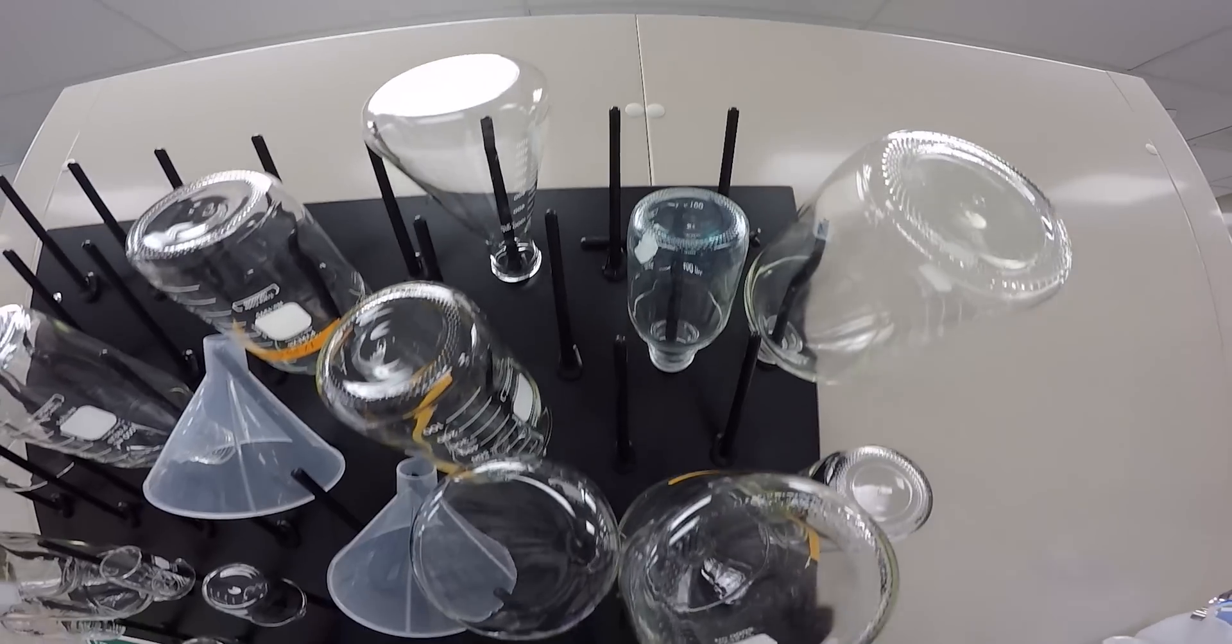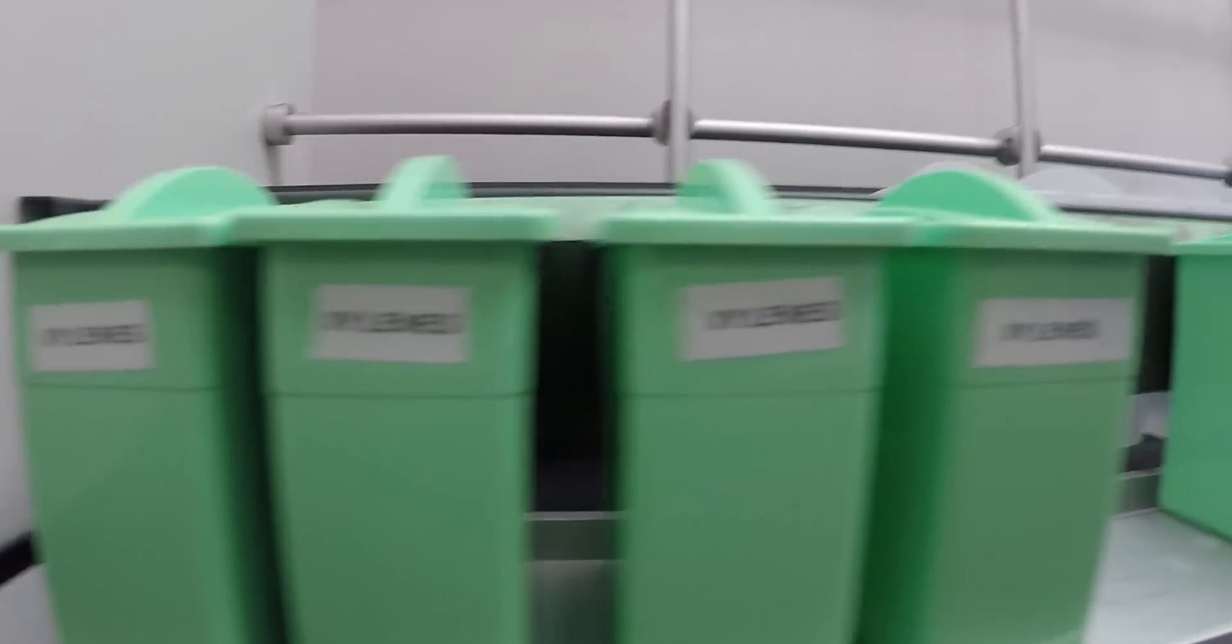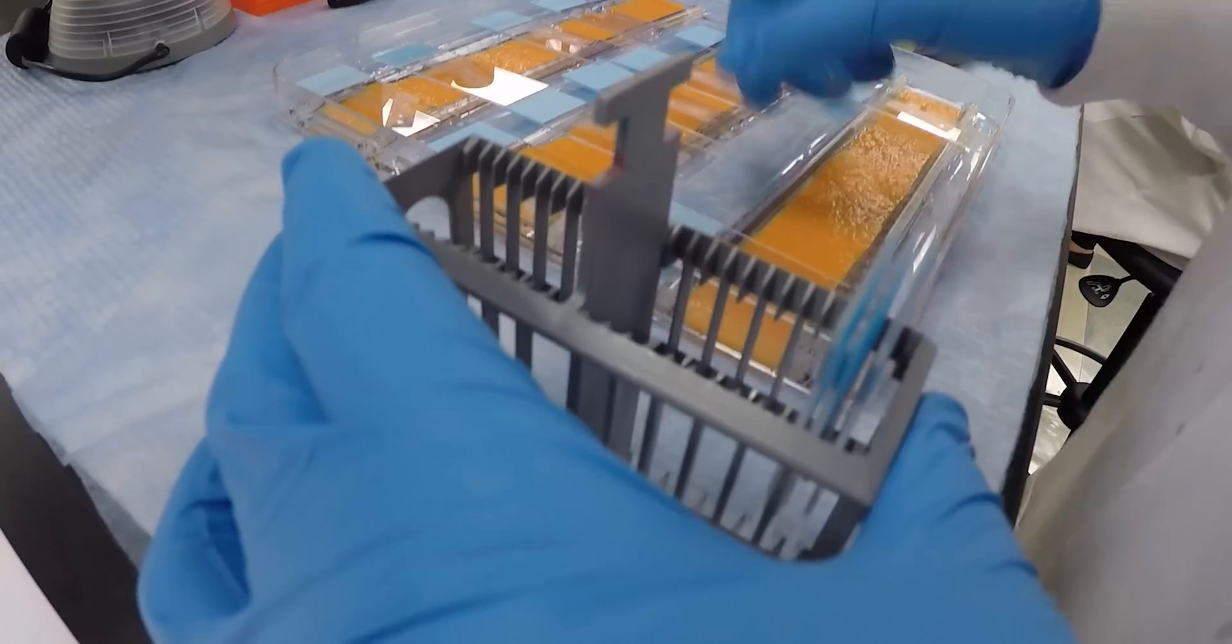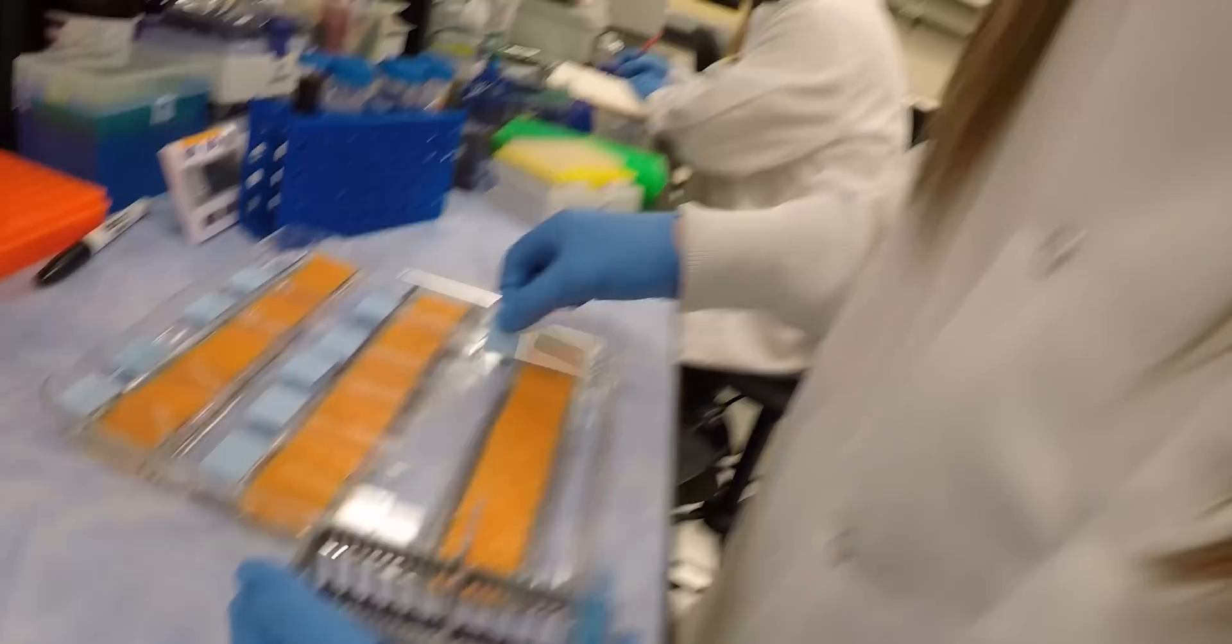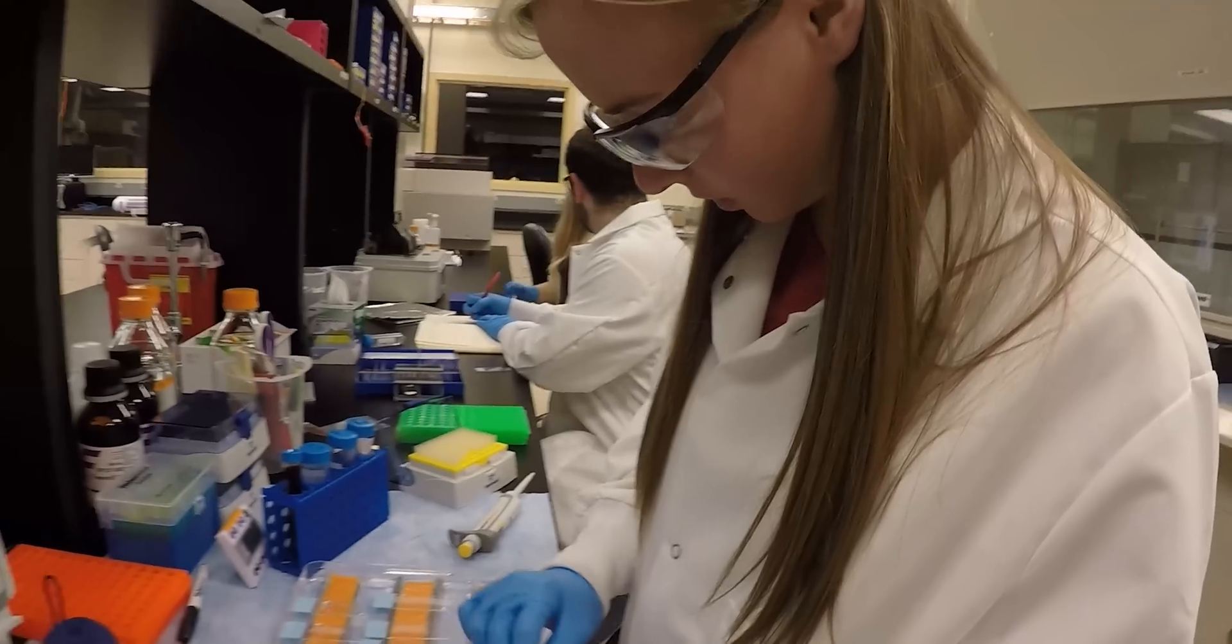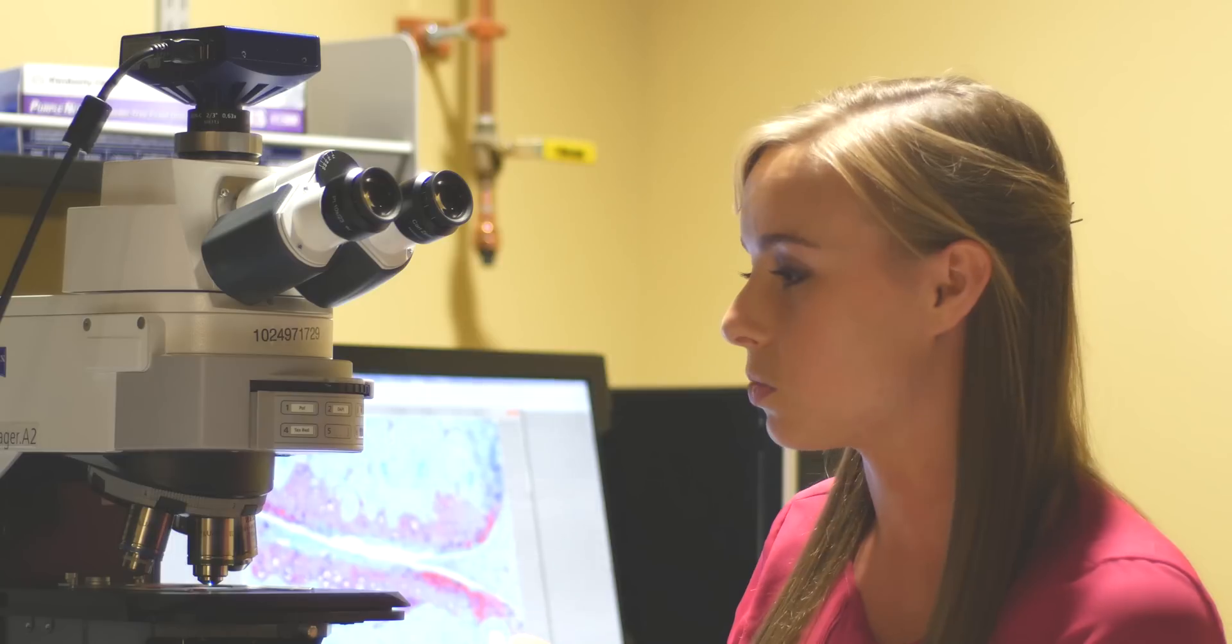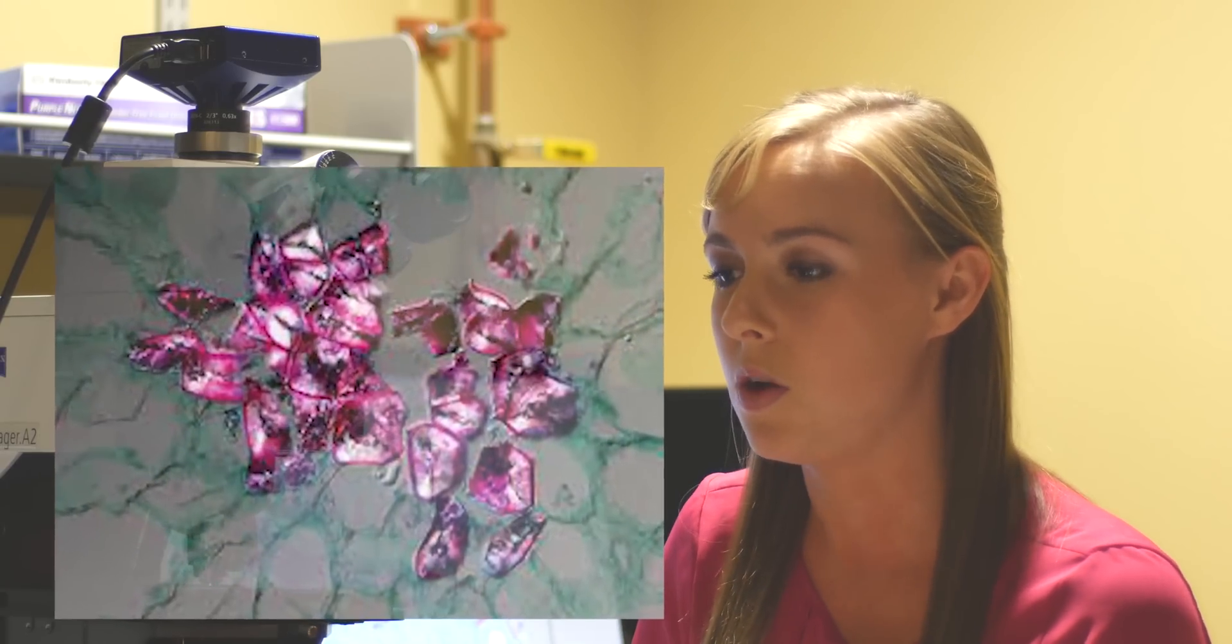At the cell level, I do immunohistochemistry, which is just using fluorescently labeled antibodies that bind to certain antigens in the knee. They show certain cell processes or proteins or pathways we want to look at, such as if the cells are dying or dividing. Once we bring them to the microscope after treating them, those cells will glow for the certain thing we're looking at, and we'll be able to see what part of the progression of the disease cells are dying and where they might be dying.